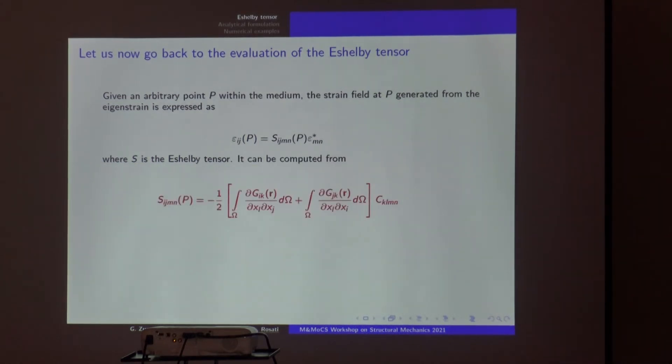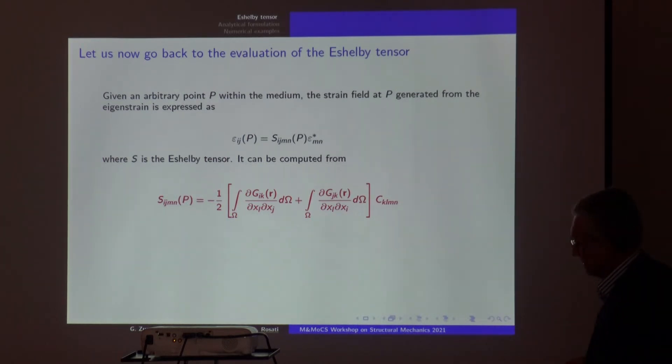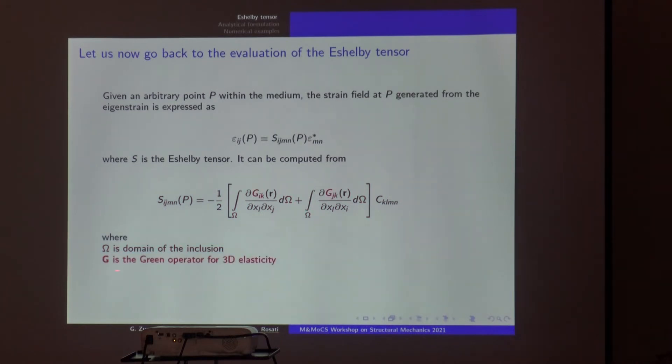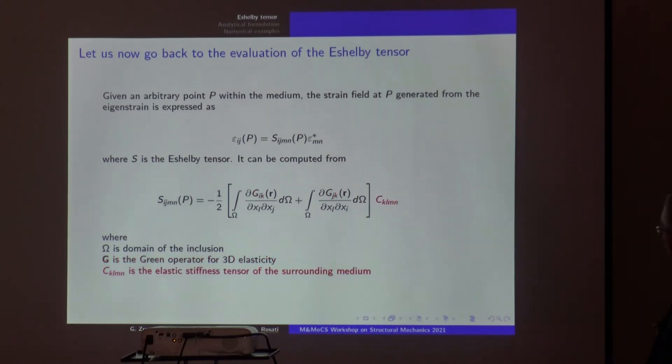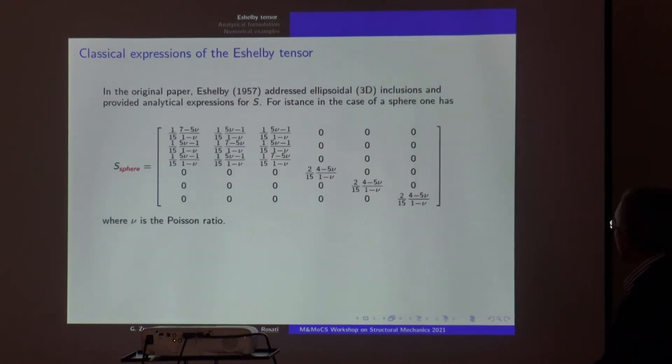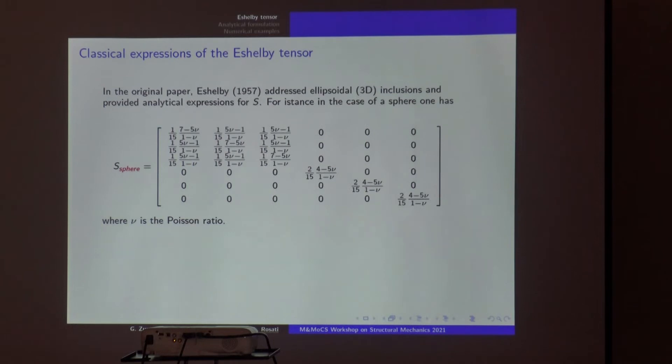Let's see how this Eshelby tensor is defined. It has the so-called minor symmetries on the first and second pair of indices. It does not have the major symmetry as the classical elastic tensor. Basically, to evaluate this tensor you have to compose with the elastic tensor of the hosting medium the derivative of the Green function of your material. This is the expression you find in books, many of them with a lot of mistakes.